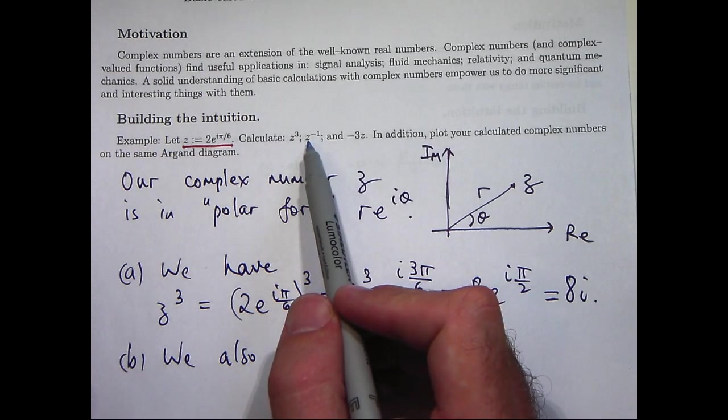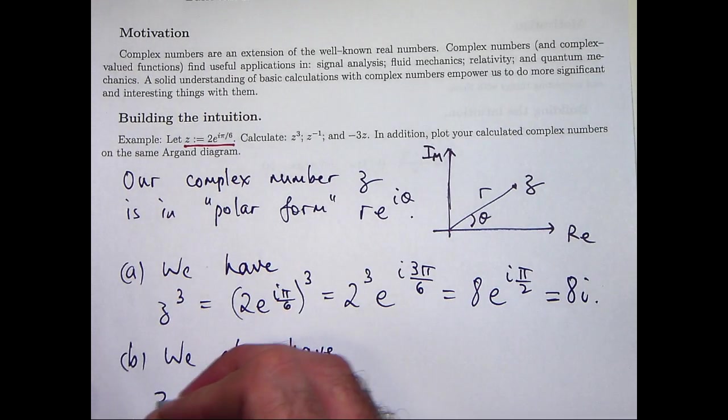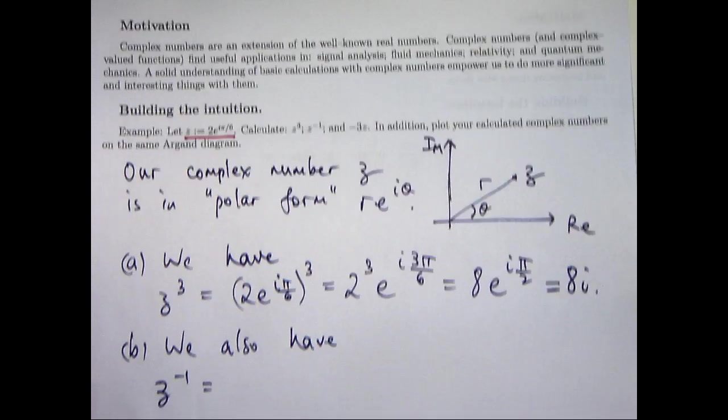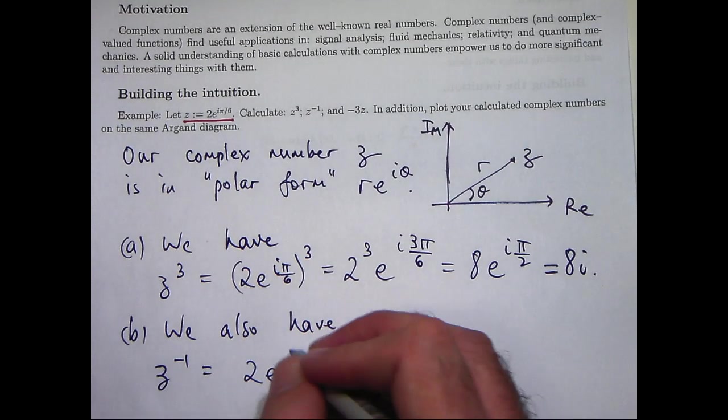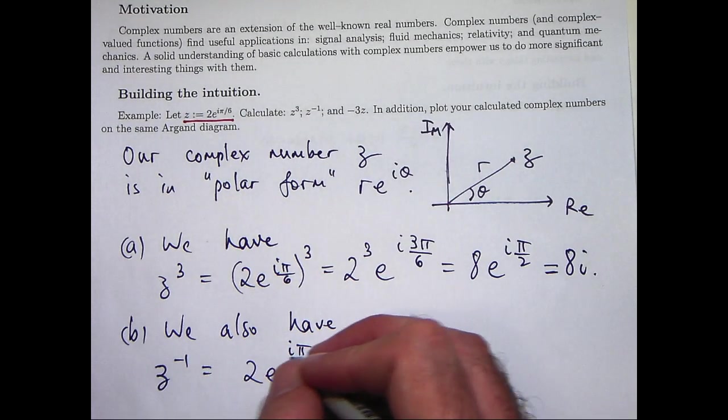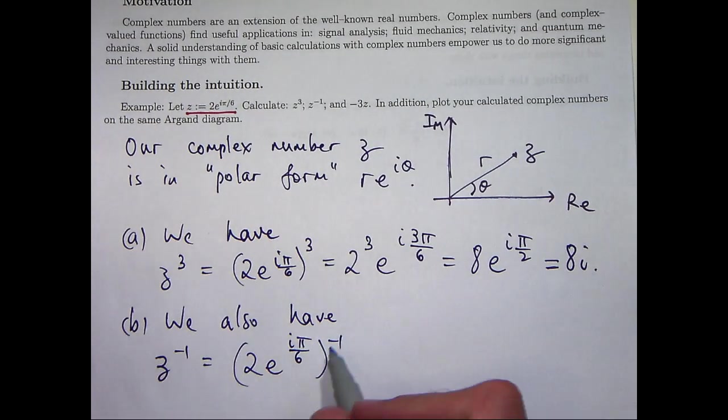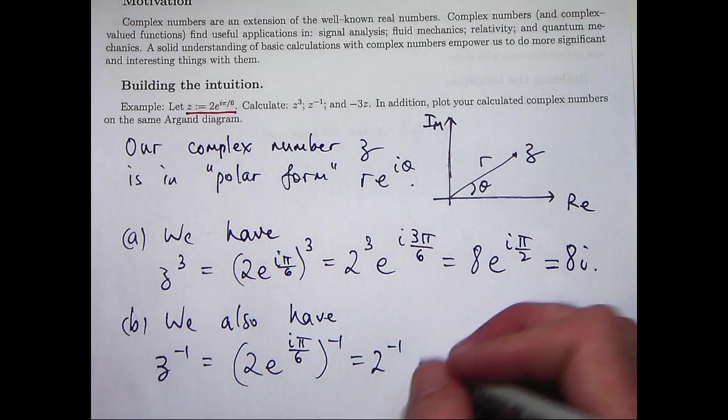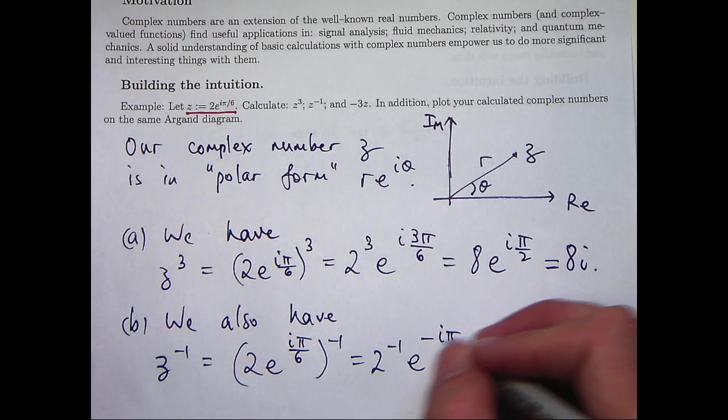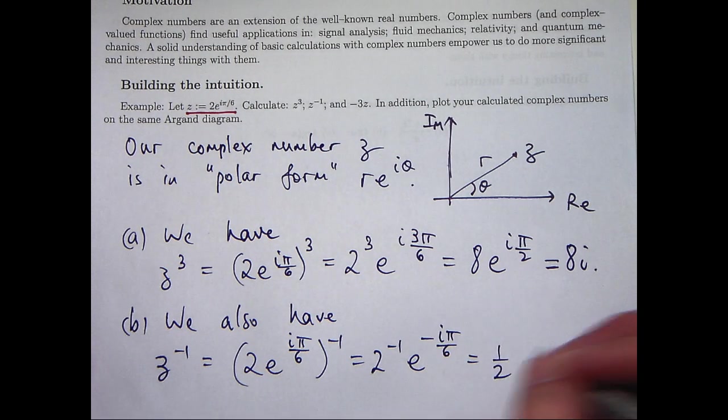So let's get on to our second calculation, z⁻¹. Well, again, using our polar form, the calculations will simplify really easily. So again, the index law is applied and just a simplification is involved.